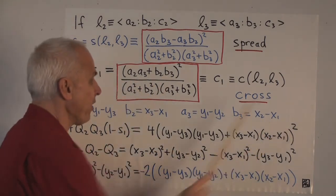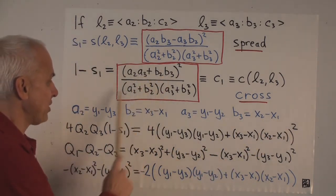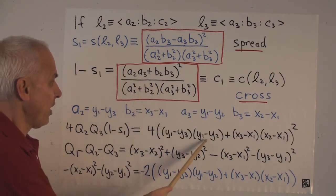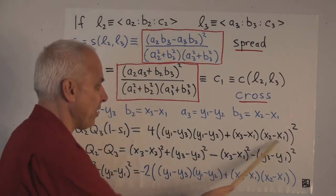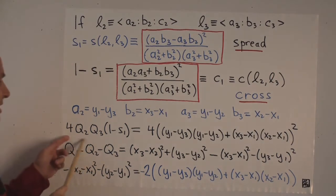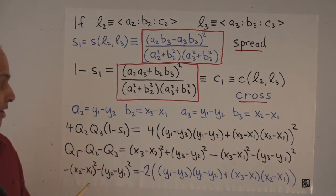And what we're left with is 4 times the numerator, which is the square of just what you get when you substitute these four things in. There's a2, there's a3, there's b2, and there's b3. So this is the right-hand side of the cross law.